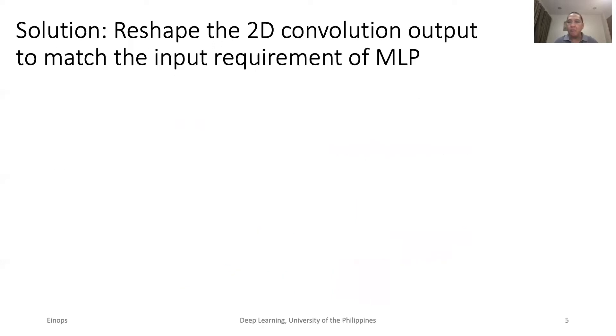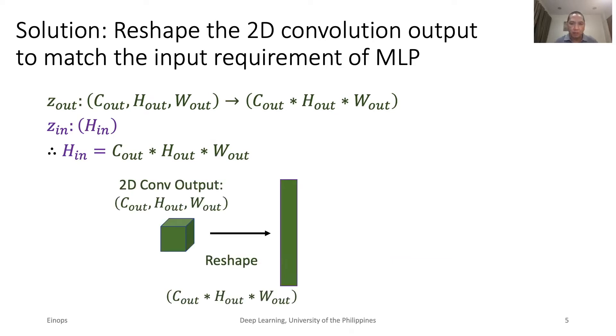To match, we reshape the output of the 2D convolution such that its shape is exactly the same as the input to the MLP. In this case, that would be the product of C-Alt, H-Alt, and W-Alt. This is exactly equal to H-In. Note that when designing the neural network, we have the flexibility to indicate the MLP layer input size. The process is like flattening a cube to make it a long rectangular shape. Now, the two shapes are exactly the same. The output of the convolution can now be the input to the MLP layer.